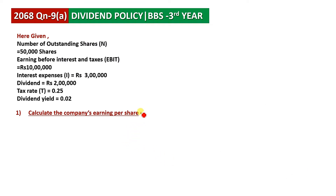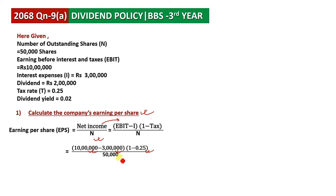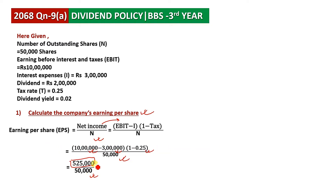To calculate EPS: EPS equals net income divided by number of shares. Net income is EBIT minus interest, multiplied by (1 minus tax), divided by number of shares. EBIT is 10 lakh rupees, interest is 3 lakh, tax is 0.25, and number of shares is 50,000. Net income comes to 5,25,000 and number of shares is 50,000.